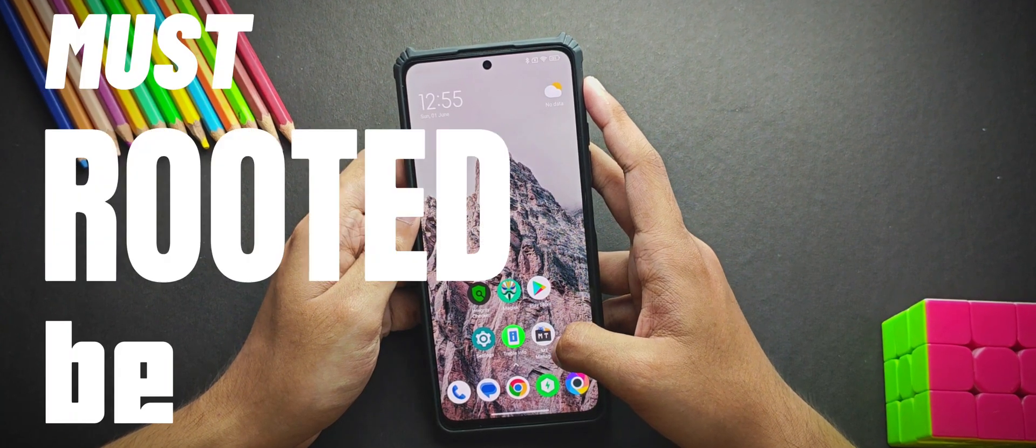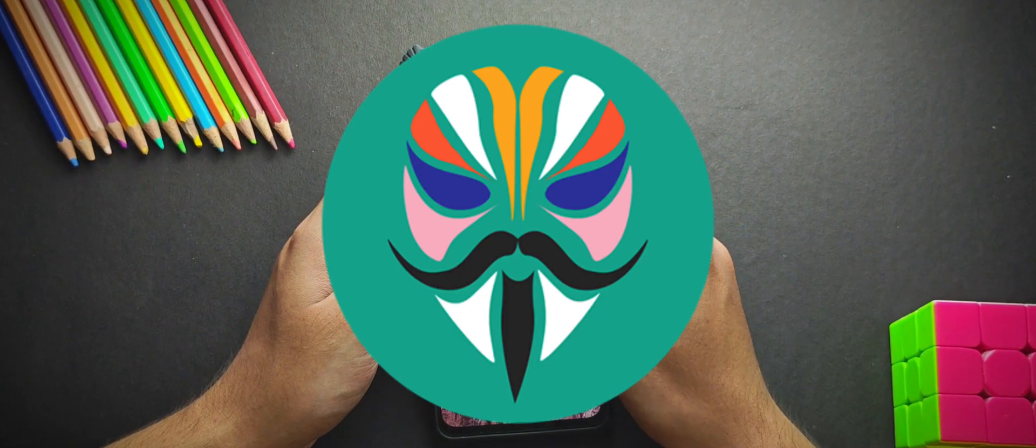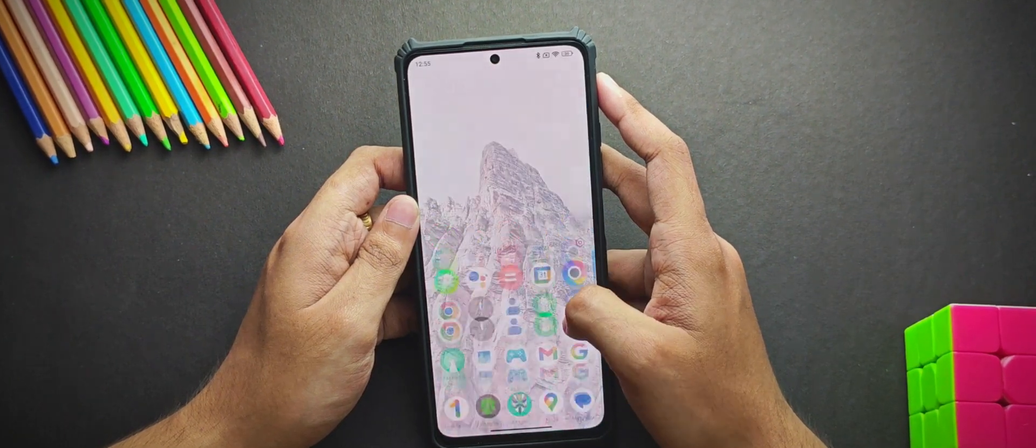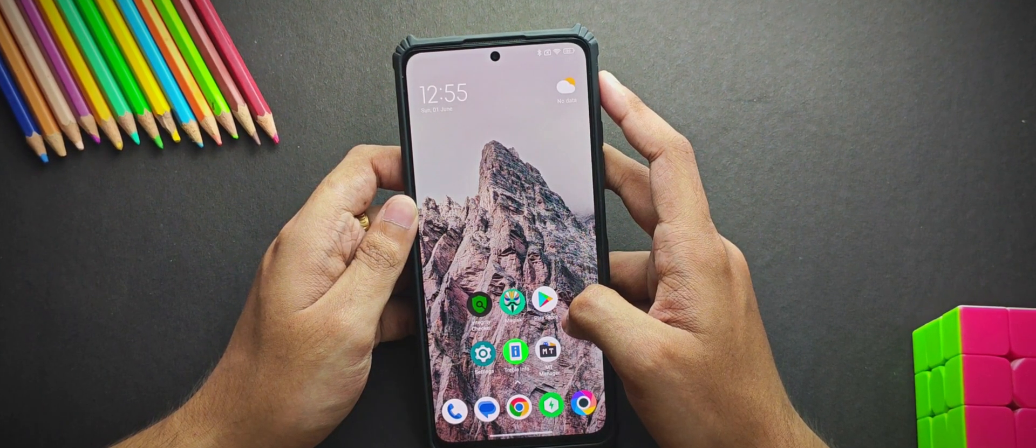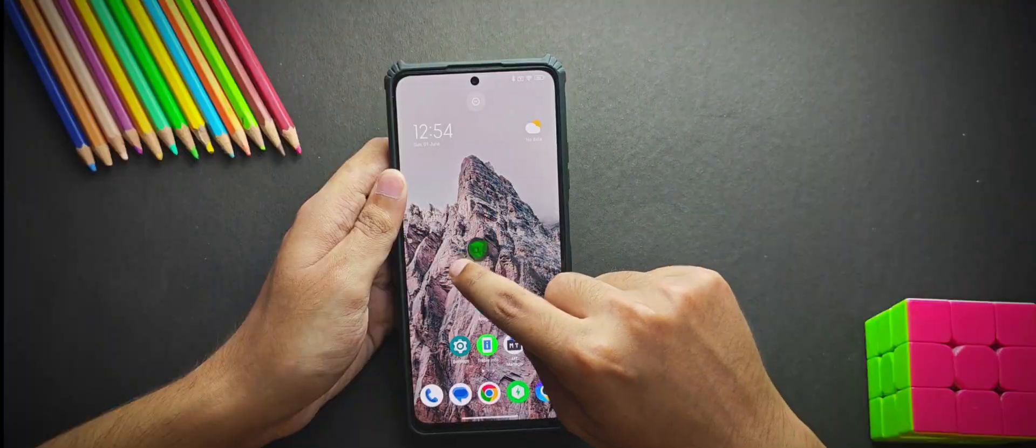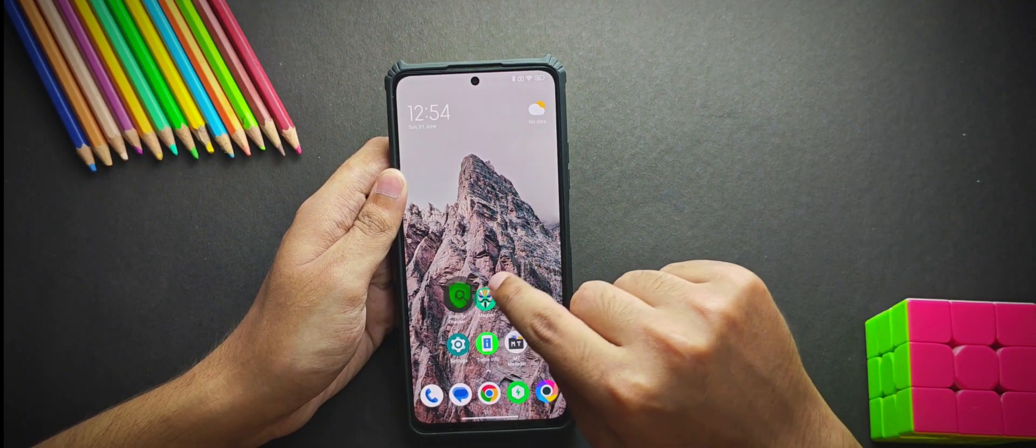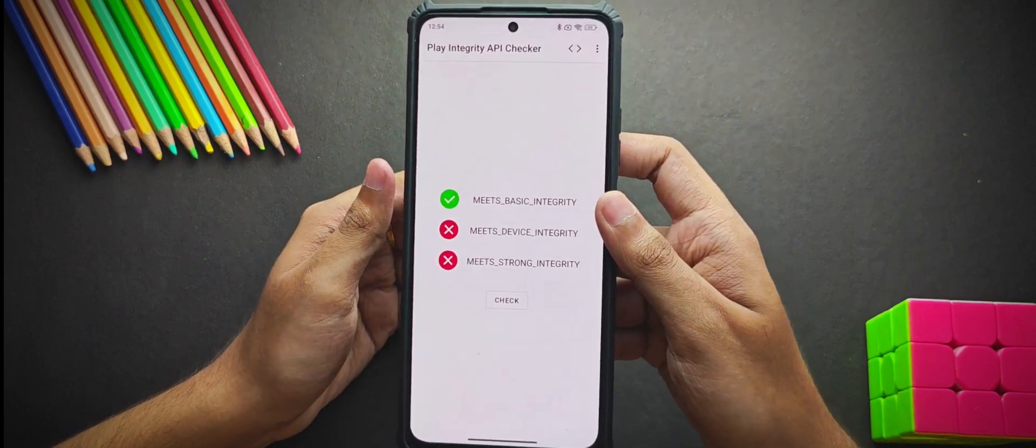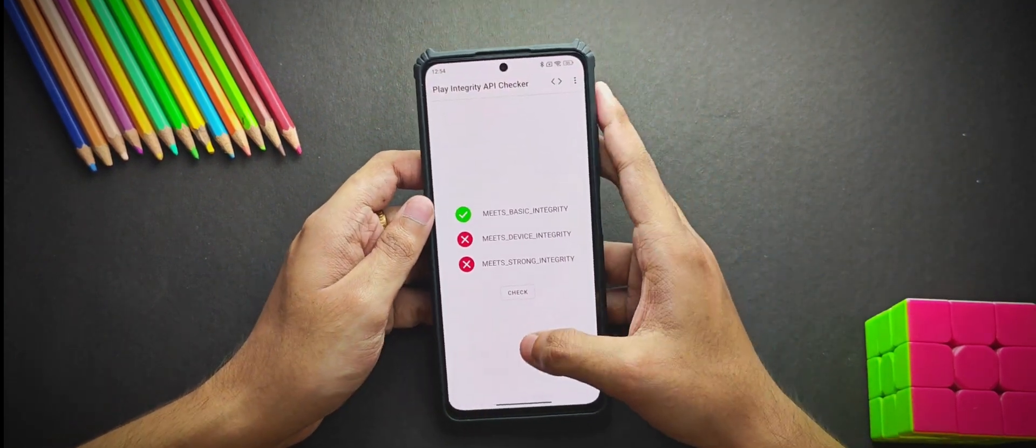So firstly your device must be rooted with Kernel SU or Magisk. If you don't know how to root your device I have already made a video regarding that so make sure to check it out from the i button. Yes this is mandatory to pass strong integrity. Now if we check the current integrity status by the Play Integrity Checker app then it doesn't pass any of the integrity values other than basic integrity.